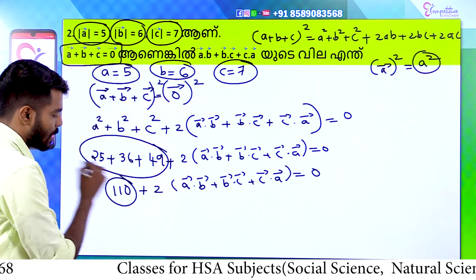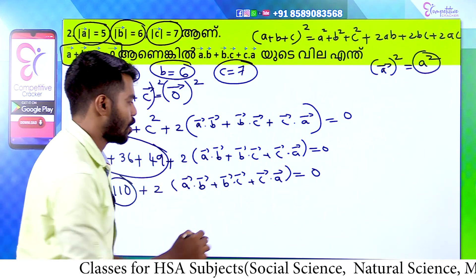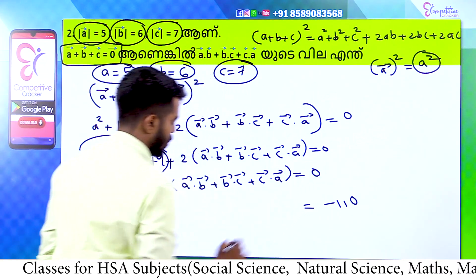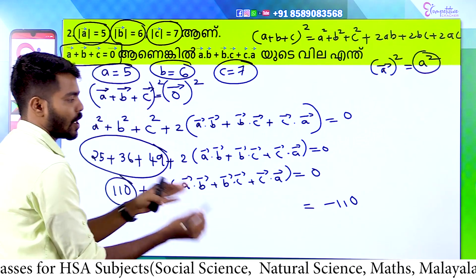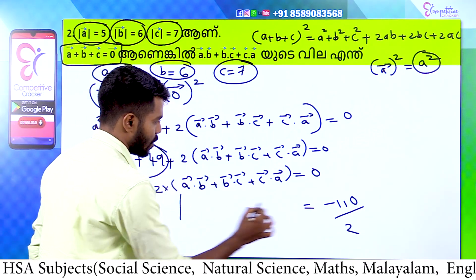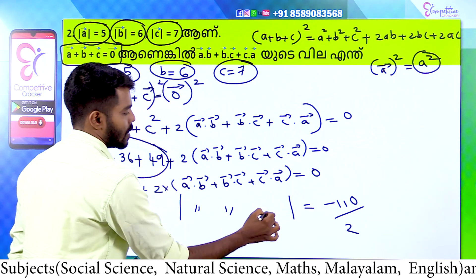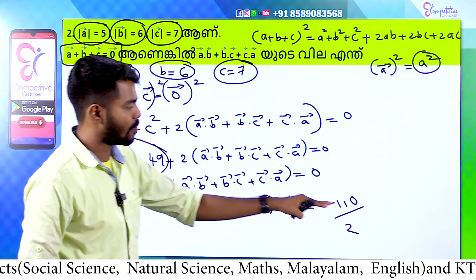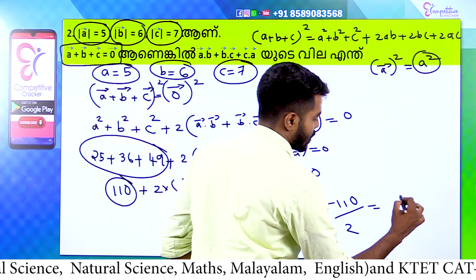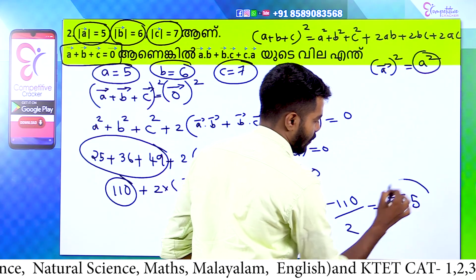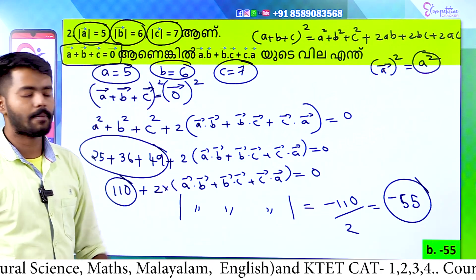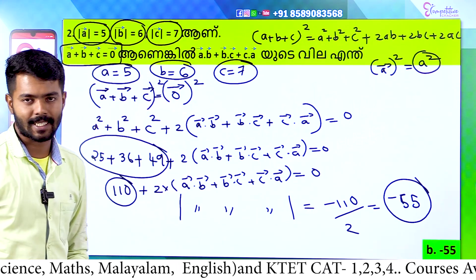So 110 plus 2 into the dot product expression equals zero. Taking minus 110 divided by 2 gives us minus 55. The answer is minus 55, which is option B. Minus 55 is the correct answer.